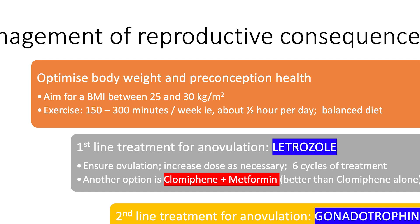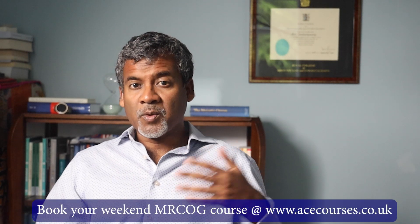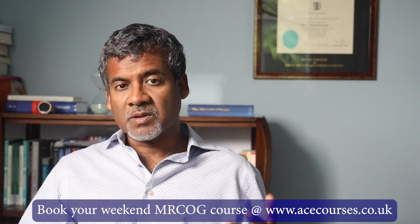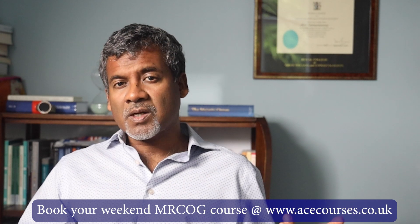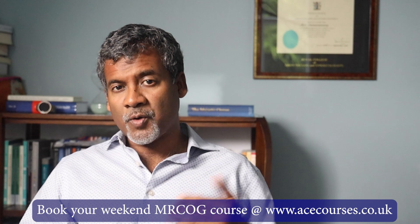Moving on to exercise, the recommendation is 150 to 300 minutes of exercise per week, which translates to approximately half an hour per day. A single bout of aerobic exercise should be at least 10 minutes. Exercise and diet combination works best when supported with appropriate behavioral strategies, and lifestyle goals should be co-developed in partnership with the patient. These strategies could include goal setting and self-monitored problem solving.